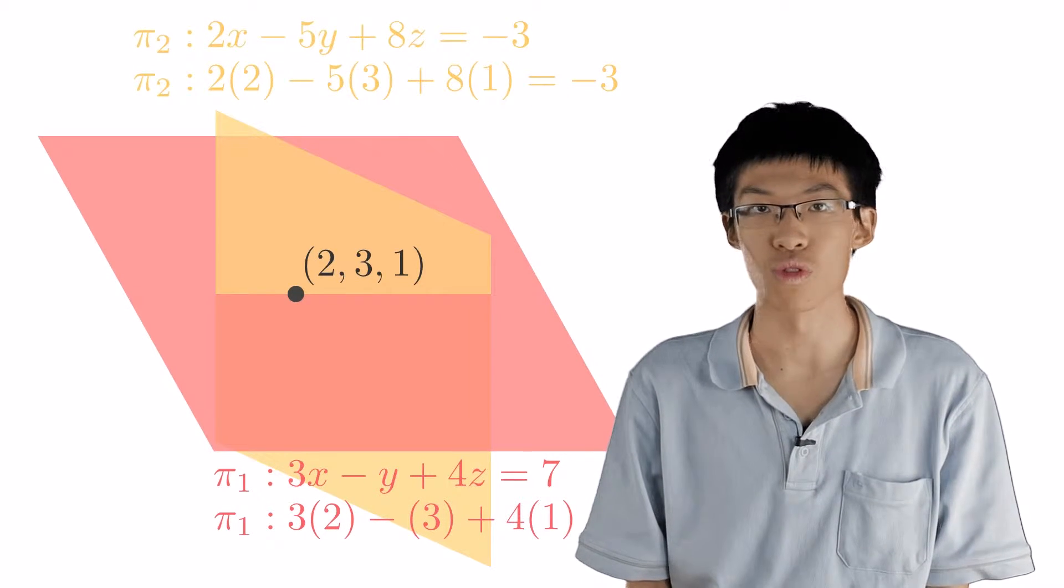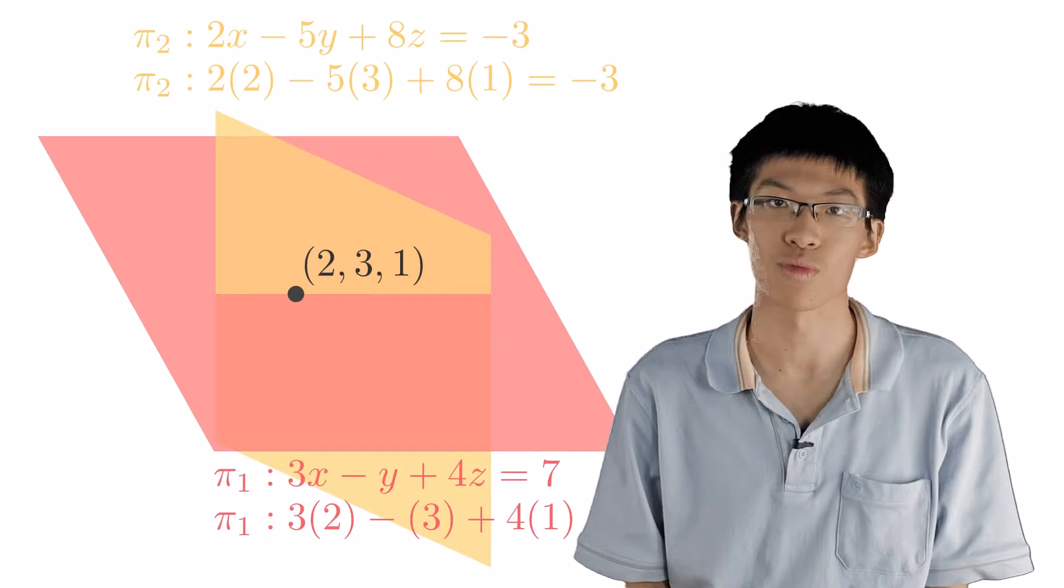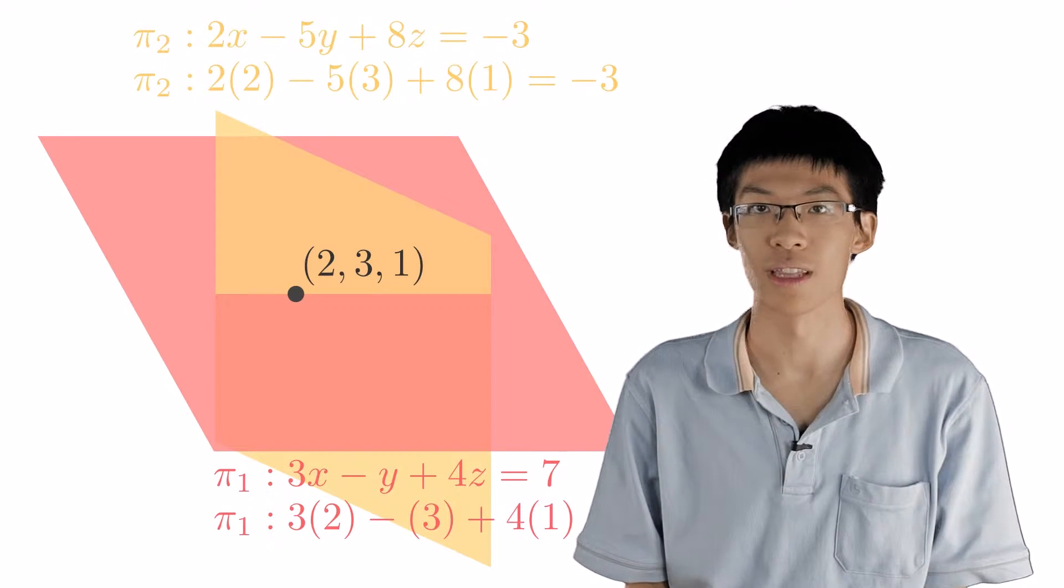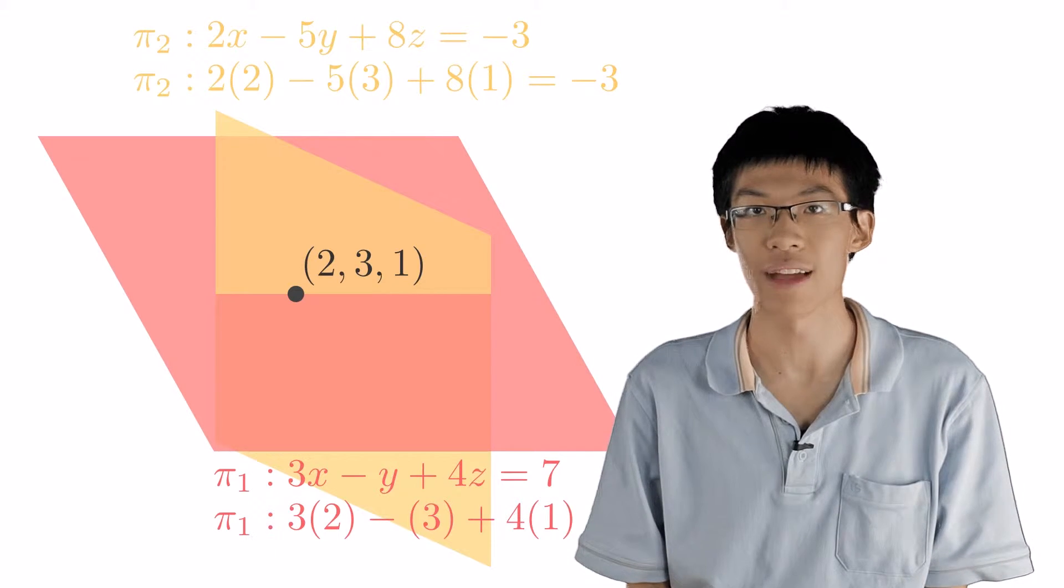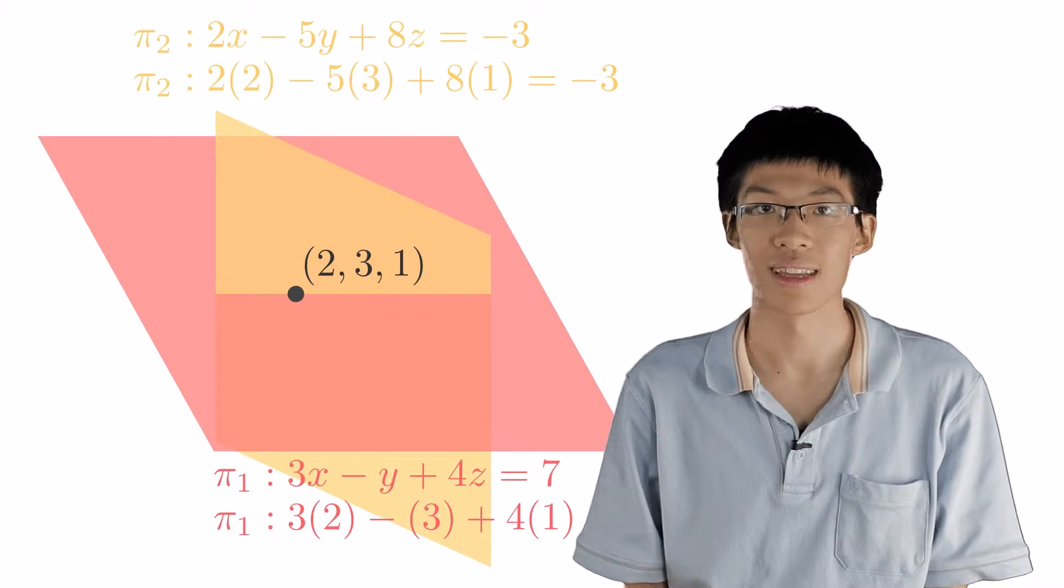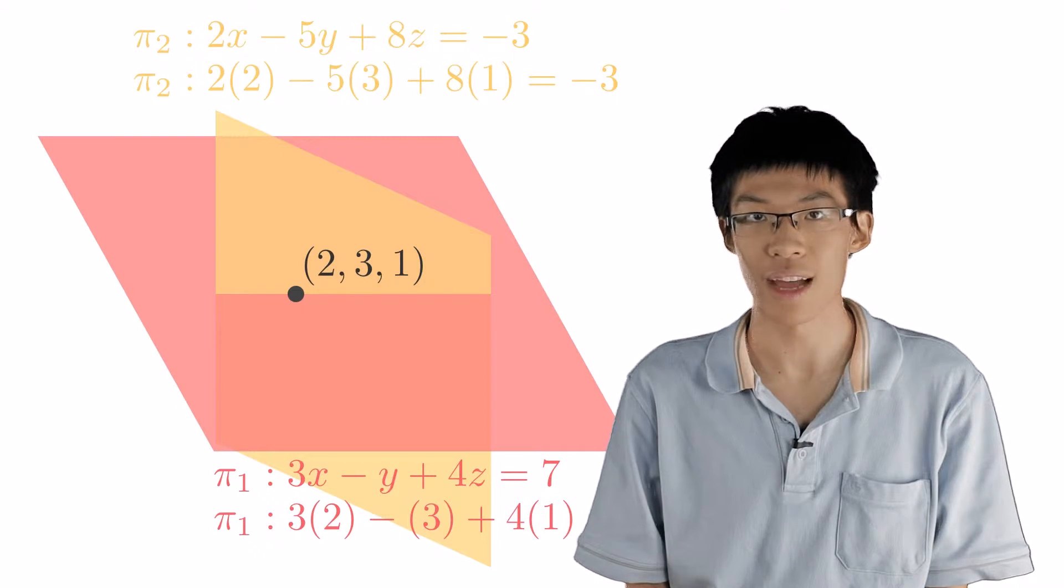For example, x equals to 2, y equals to 3, z equals to 1 is an intersection point of the two planes because substituting these values into the left-hand side of equation 1 gives you 7 and substituting it into the left-hand side of equation 2 gives you negative 3, satisfying both equations.